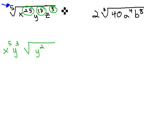For the z's, when we do 3 divided by 5, we get 0 remainder 3. This means 0 comes out, and the 3 z's remain inside, giving us our final solution: x to the 5th, y cubed, times the 5th root of y squared, z cubed.